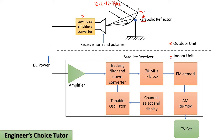The gain of the parabolic dish is proportional to (d/λ)², where d is the diameter and λ is the wavelength. The downlink frequency band of 12.2 to 12.7 GHz spans a range of 500 MHz, which accommodates 32 TV FM channels, each of which is 24 MHz wide.